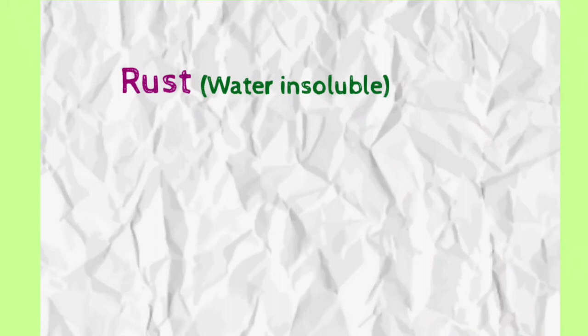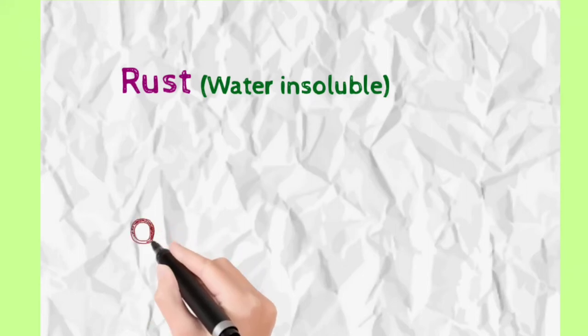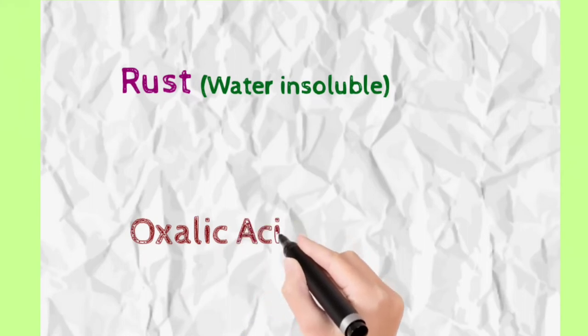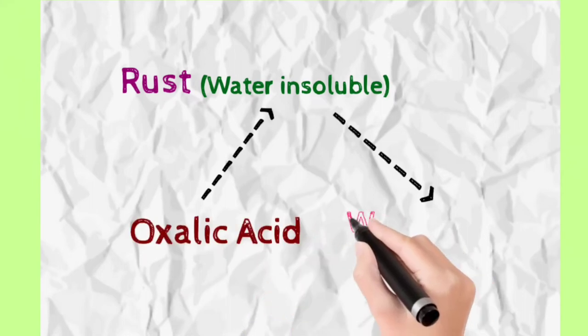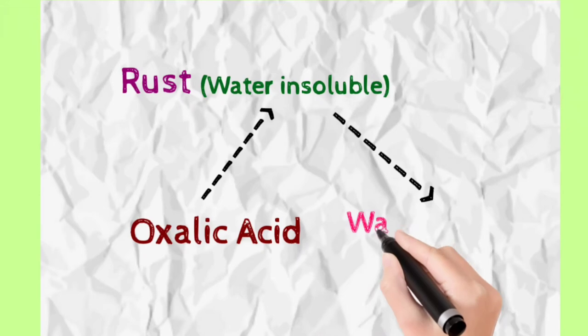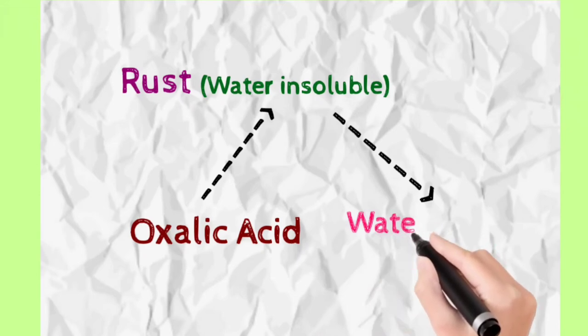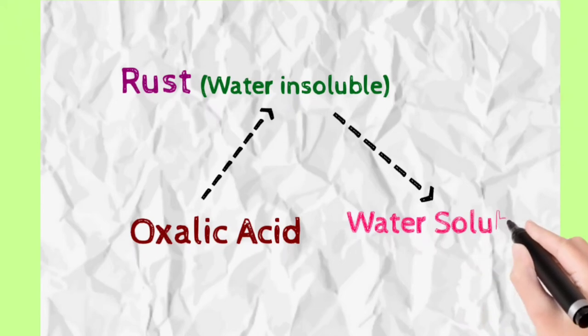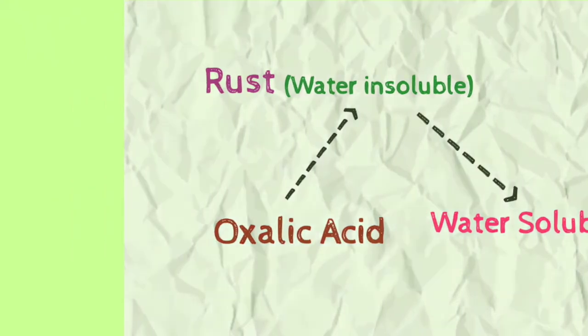How does oxalic acid act on rust? When we apply oxalic acid to rust, it reacts with the rust and makes it water soluble. So oxalic acid converts the water-insoluble rust into a water-soluble compound.